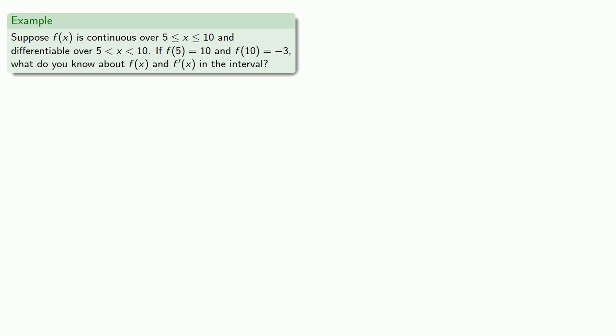We know the function values at 5 and at 10. So those give us two points on the graph. And again, if it's not written down, it didn't happen.